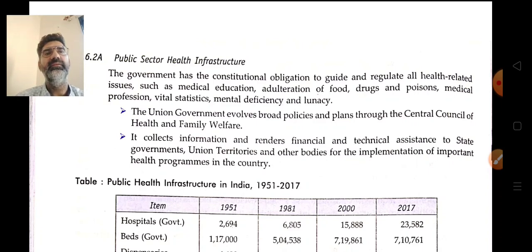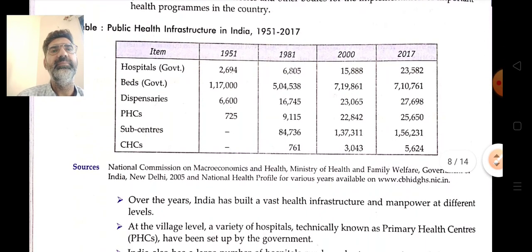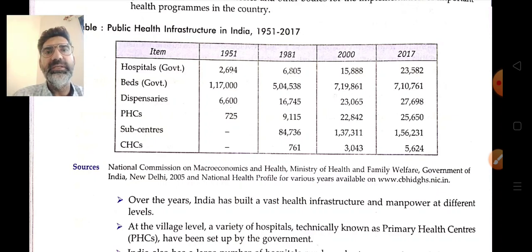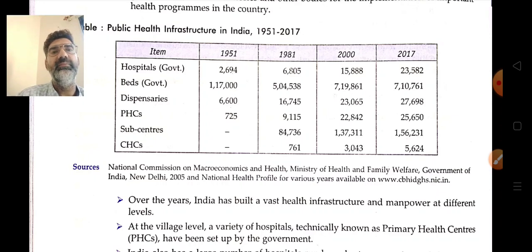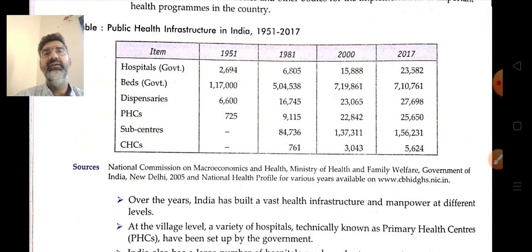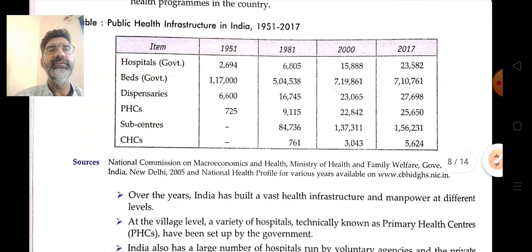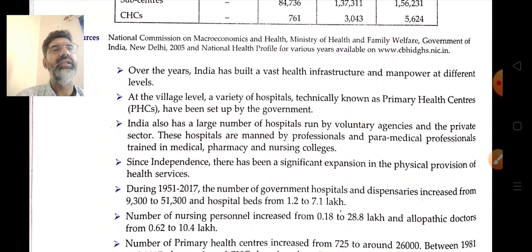Comparing data from 1951 to 2017, progress is visible across all sectors: government hospitals and dispensaries increased from 9,300 to 51,300; hospital beds increased from 1.2 lakh to 7.1 lakh; nursing personnel increased from 0.18 lakh to 28.8 lakh; and allopathic doctors, primary health centers, and community health centers have all seen remarkable growth. India has built a vast health infrastructure and manpower over the years.